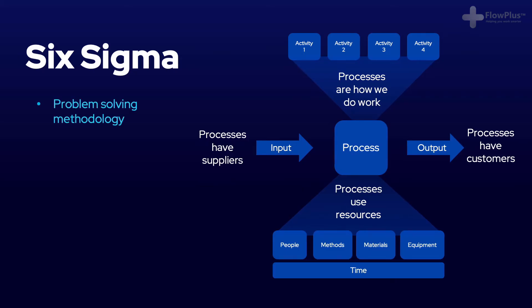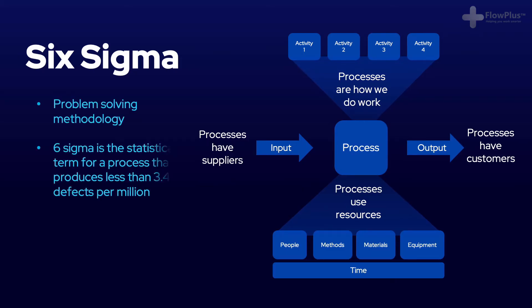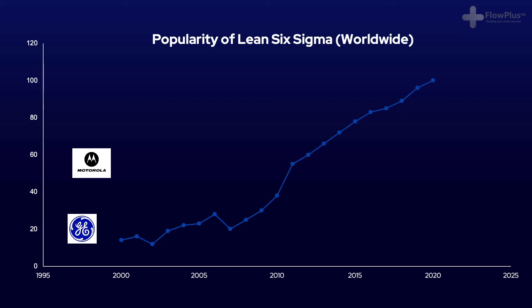Six Sigma is a problem solving methodology. It is the statistical term for a process that produces less than 3.4 defects per million, and it aims to embed quality into the process. Six Sigma was pioneered by companies like Motorola and General Electric in the 90s and has increased in popularity ever since.